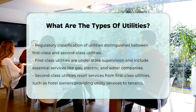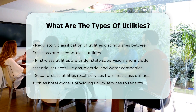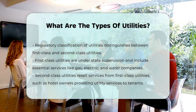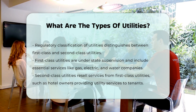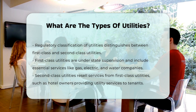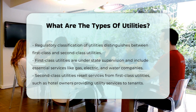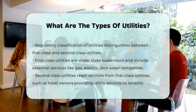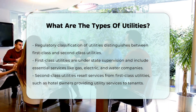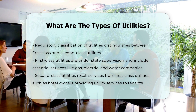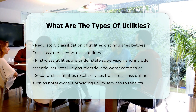Regulatory classification of utilities. In a regulatory context, utilities can be classified differently. First-class utilities include utilities under state supervision, such as street surface, rapid transit, subway, and elevated railroads, as well as gas, electric, steam, water, telephone, and telegraph companies.